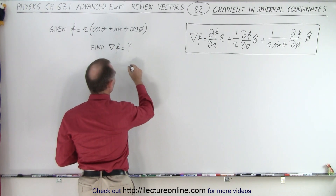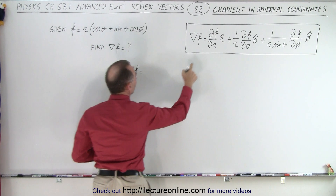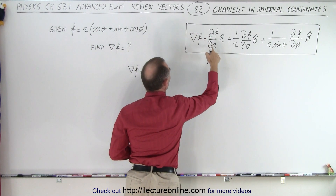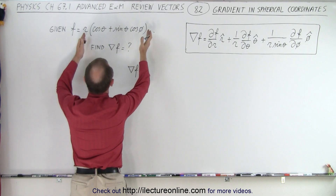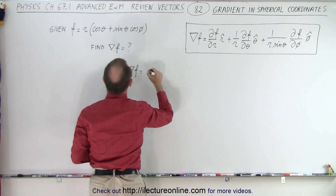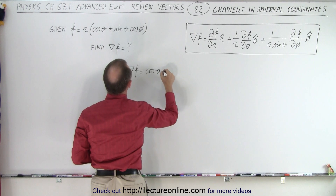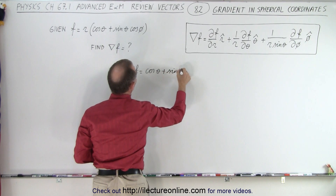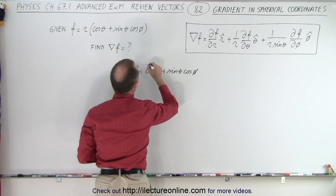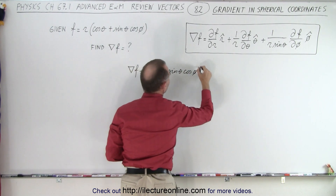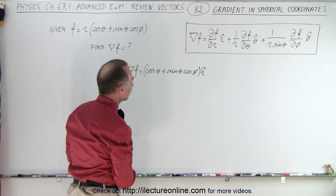The gradient of f is equal to the partial derivative of the function with respect to r. Since r is the variable and the rest are constants, this simply becomes cosine of theta plus sine of theta cosine of phi, all in the r direction. That's the first component.